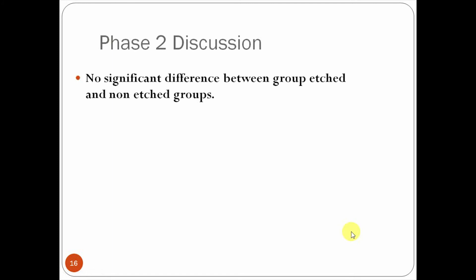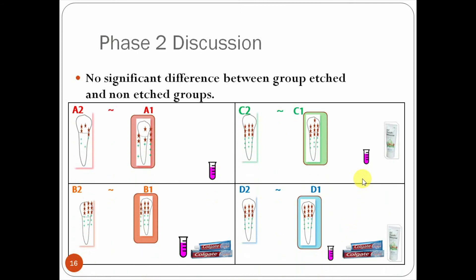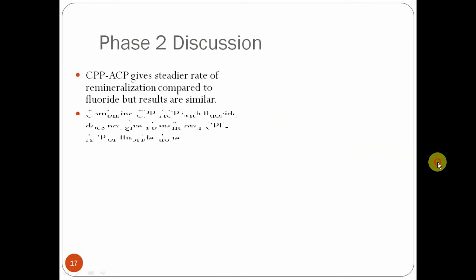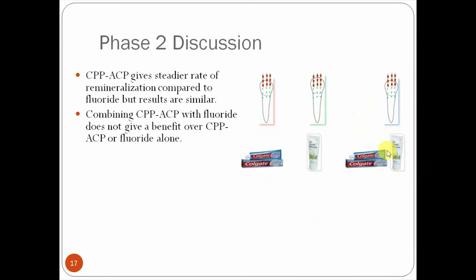In the phase two, the most important thing is, though, that the difference between etching and non-etching, the subgroups, there was no significant difference. We continue along with our phase two discussion towards the conclusion. We should note that the GC tooth mousse gives a steadier rate of remineralization compared to fluoride, but the results, again, are, as we said, similar. Now, if we combine the GC tooth mousse and the fluoride, we're not going to necessarily get a better effect than if we used the Colgate or the GC tooth mousse alone. You're still going to get the same amount of mineral deposition that we see here. Now, sometimes if we use acid etching, it's more effective for the fluoride, but it's not as beneficial for the GC tooth mousse.